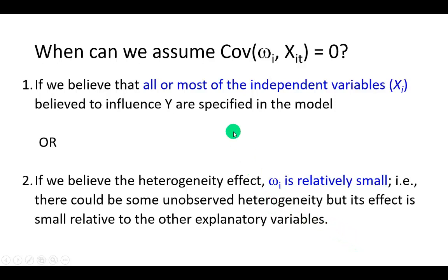And when can we assume it to be zero? One is if we believe that all or most of the independent variables believed to influence the dependent variable Y have been clearly specified, which, as you would agree, could be a tall order. Or if we believe that the heterogeneity effect omega is relatively small.